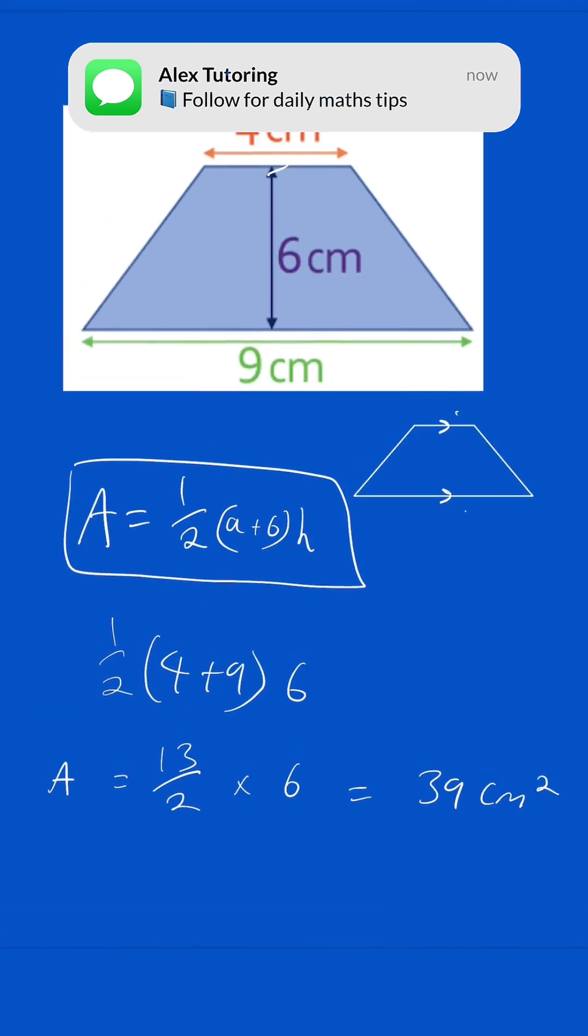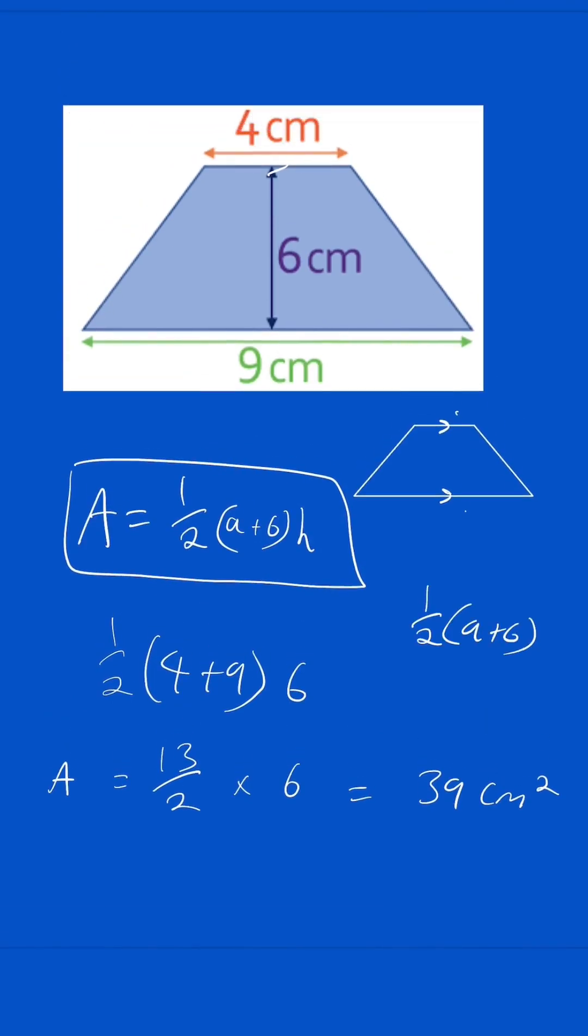Now, why is it a half (a plus b)? Here's the first part. What we're doing is we have a and b, which are parallel sides, and we are essentially averaging them and turning this into almost a rectangle shape. To find the average value between a and b, you add them together and divide by how many there are, which is two. That's why we do it.